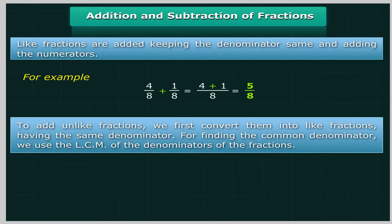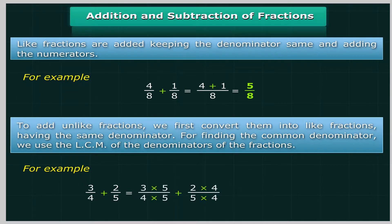To add unlike fractions, we first convert them into like fractions having the same denominator. For finding the common denominator, we use the LCM of the denominators of the fractions. For example, 3 upon 4 plus 2 upon 5 equals (3×5) upon (4×5) plus (2×4) upon (5×4), which equals 15 upon 20 plus 8 upon 20, which equals 23 upon 20, or 1 and 3 upon 20.